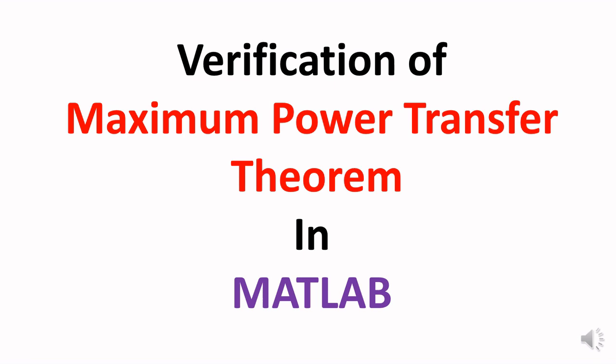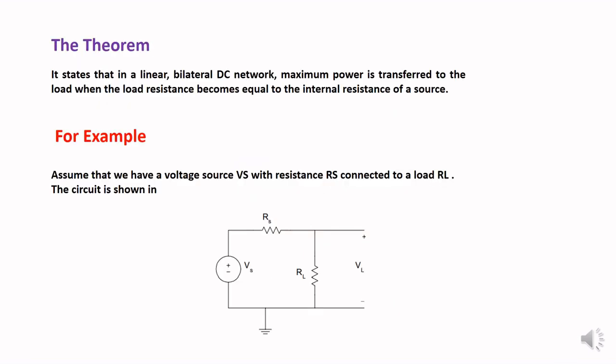Today we discuss the Maximum Power Transfer Theorem and verify it in MATLAB. Going to the verification, we first discuss the statement: in a linear bilateral DC network, maximum power is transferred to the load when the load resistance becomes equal to the internal resistance of the source. For example, we assume an electrical circuit here.